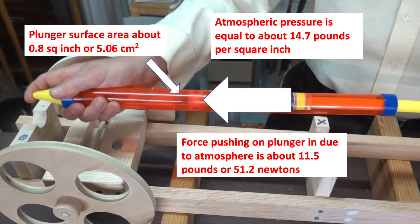The plunger is slightly smaller than a square inch so the exerted force is somewhere around 11.5 pounds or 51.2 Newtons.